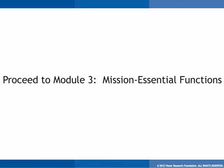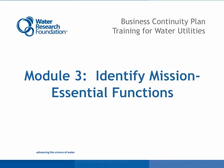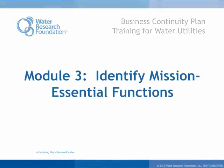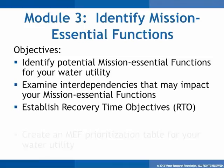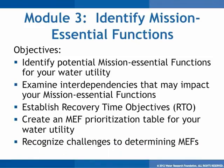The business impact analysis helps identify the maximum timeframe before interruption of a mission essential function causes significant harm — this timeframe is called the recovery time objective, or RTO, described further in Module 3. This concludes Module 2. In Module 3, we will examine Mission Essential Functions, or MEF. One of the critical steps in preparing a BCP is to identify and analyze the mission essential functions of the utility. The objectives of this module are to identify MEFs, examine interdependencies, establish recovery time objectives, create a prioritization table, and recognize challenges to determining MEFs.